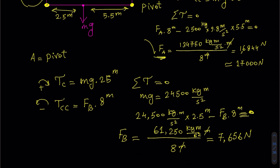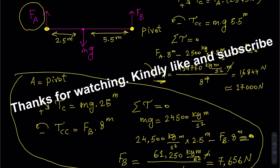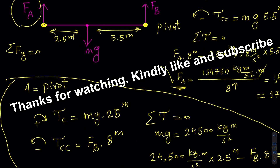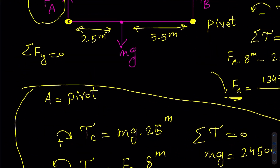There is also a simpler way to find F B now that we have F A. We can use the first condition of equilibrium, sigma F y equals zero. All upward forces are positive and downward forces are negative. Adding F A, F B, and negative MG and setting equal to zero gives the same result for F B.